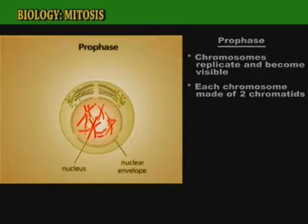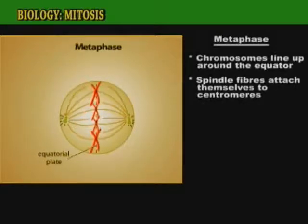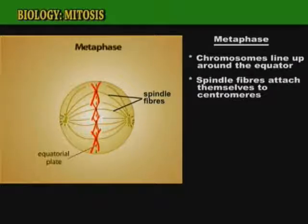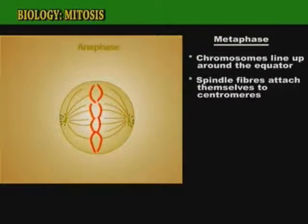The third phase of mitosis is metaphase. At this stage, the chromosomes line up around the equator of the spindle fibers. These fibers attach themselves to the centromere on each chromosome and pull the chromosomes apart.